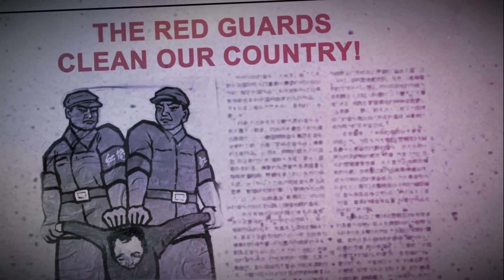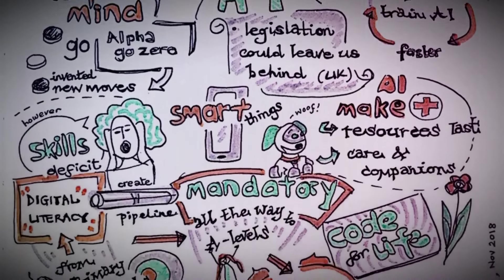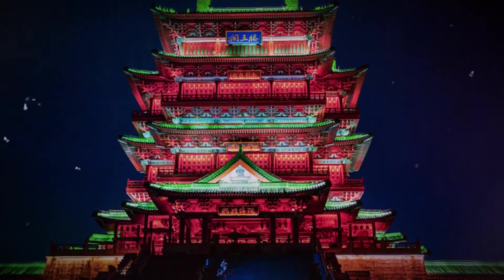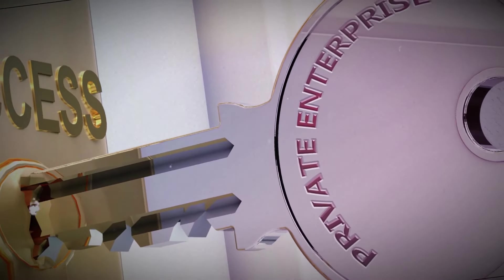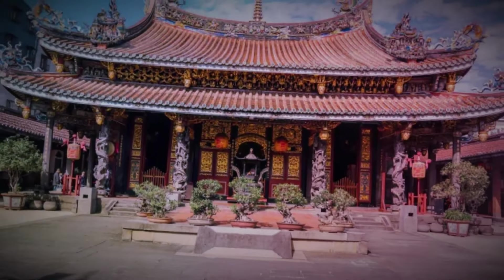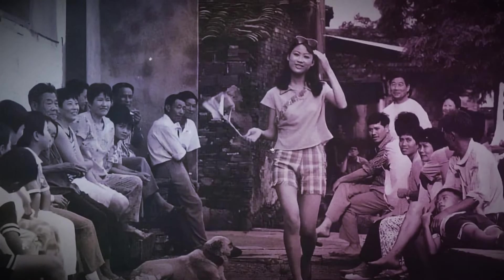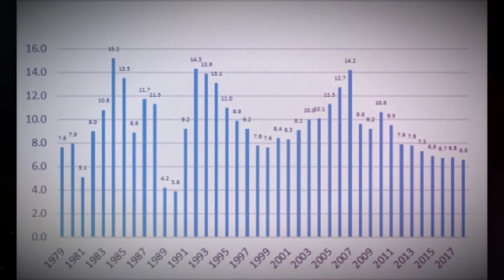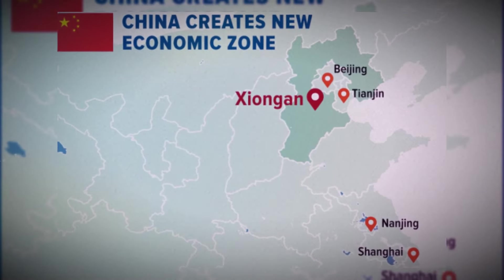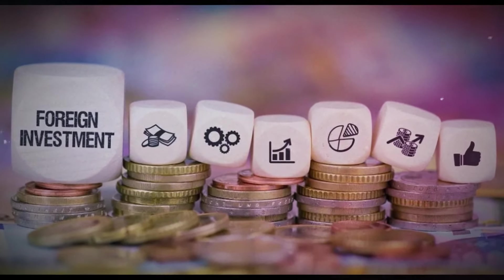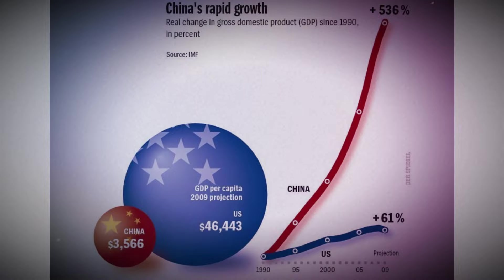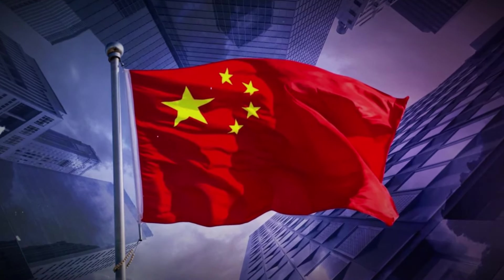Millions of young people, known as the Red Guards, were mobilized to carry out Mao's vision, leading to widespread violence, forced labor, and the disruption of education and economic activity. After Mao's death in 1976, China began to re-evaluate its commitment to strict communism. Under the leadership of Deng Xiaoping, the country embarked on a path of economic reform and opening up, allowing for limited market-oriented policies and private enterprise. The economic reforms of the 1980s and 1990s saw the gradual liberalization of the Chinese economy, with the establishment of special economic zones, the entry of foreign investment, and the promotion of entrepreneurship. These changes sparked a period of rapid economic growth, transforming China from an impoverished nation into an economic powerhouse.